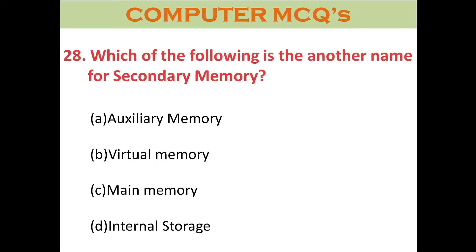Question twenty-eight: Which of the following is another name for secondary memory? A. Auxiliary memory. B. Virtual memory. C. Main memory. D. Internal storage. The right answer is A: Auxiliary memory.